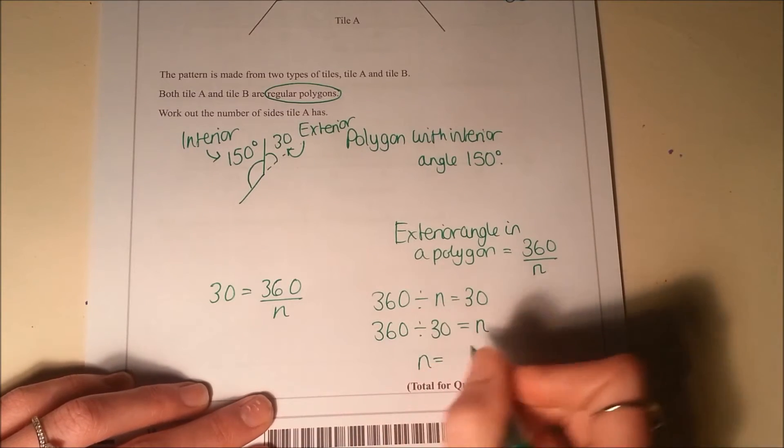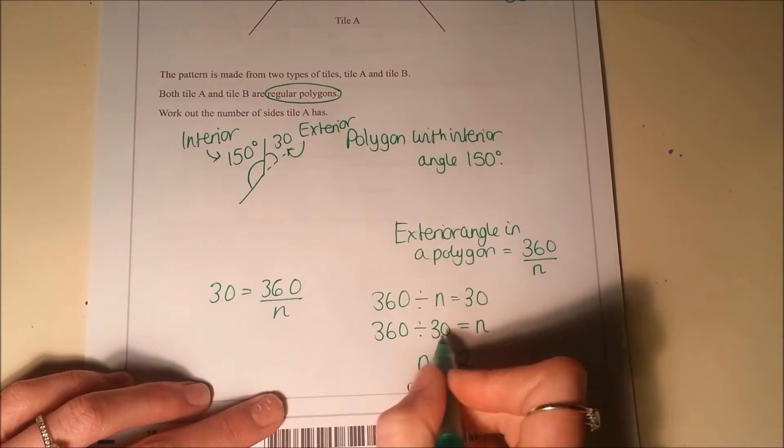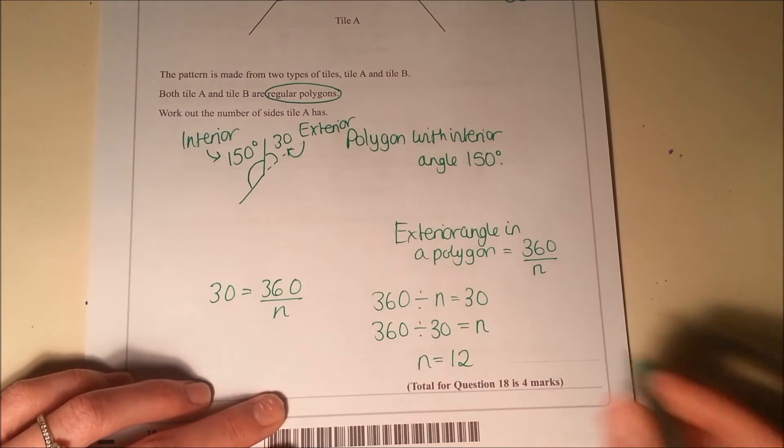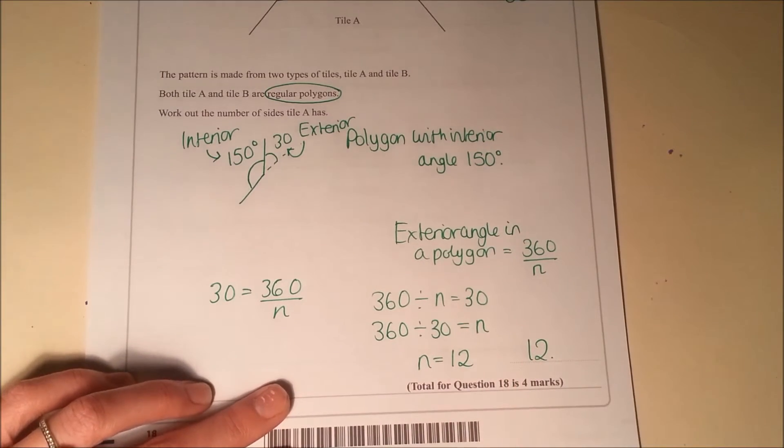Well, 3 goes into 36 12 times, so 30 is going to have to go into 360 12 times. So I've got the answer that A has got 12 sides.